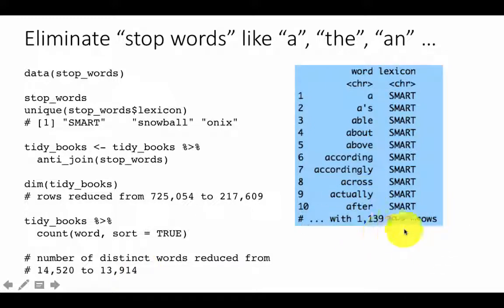So you had about 1,150 or so stop words and those have been removed. It's close to this - 13,900 to 14,500 is about 600 odd words. So Jane Austen had not used all the stop words that were available in the stop words table, but she had used about 600 of them and they have gone from this.